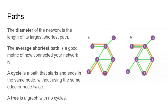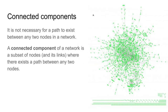Next we have cycles. A cycle, as the name suggests, starts and ends at the same node, and it's a path that doesn't use the same edge or node twice. And a tree — we've all seen hierarchical trees — is a special case of a graph that doesn't contain any cycle. It's not always the case that two nodes in a network have to have a path between them: since the network represents interactions, if there's no interaction between them, there's no edge, and sometimes if there's no edge, there's no path.